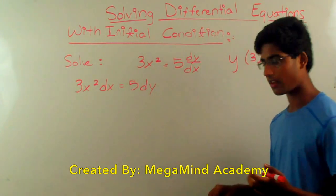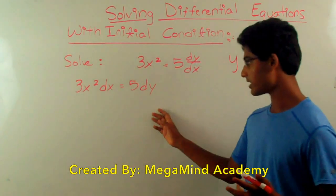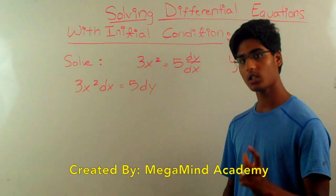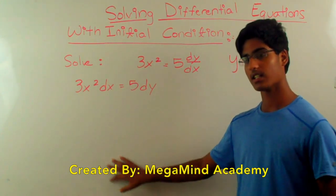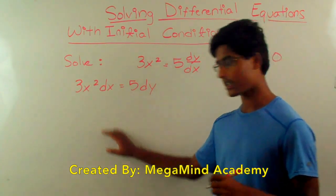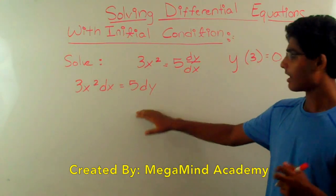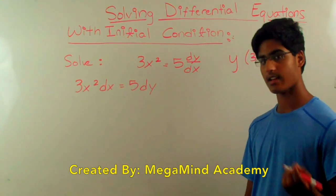So the objective of that step is to get on the left side, or on the right side, on one side we have to get something in terms of x multiplied with dx. Not divided, but multiplied by dx. You always have to multiply with dx if it's a function in terms of x. And on the other side, we have to get some function in terms of y multiplied by dy.